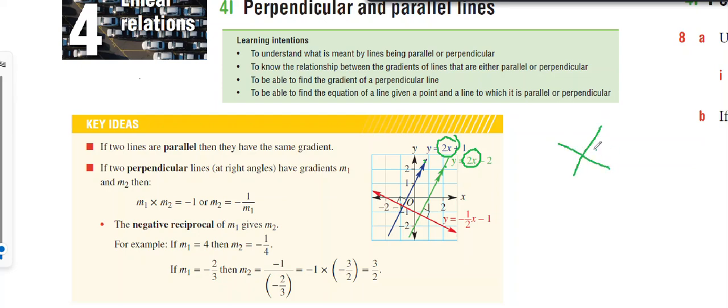Perpendicular lines make right angles. We learned that if we multiply the two gradients together, we get negative 1. We can rearrange this so one gradient is negative 1 divided by the other gradient. So if one gradient is 4, then the perpendicular will be negative 1 quarter.